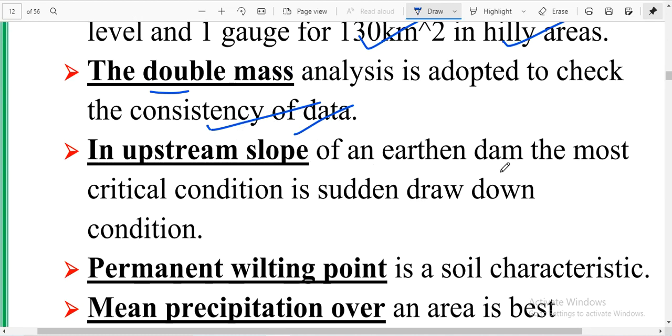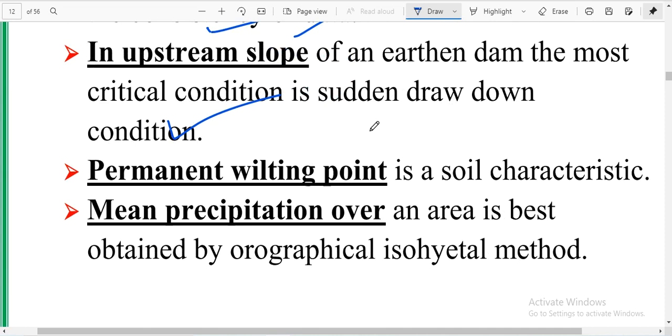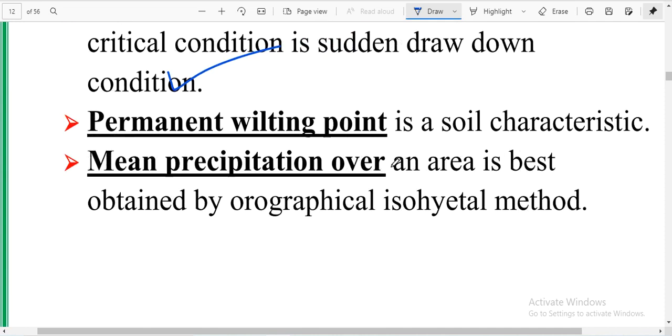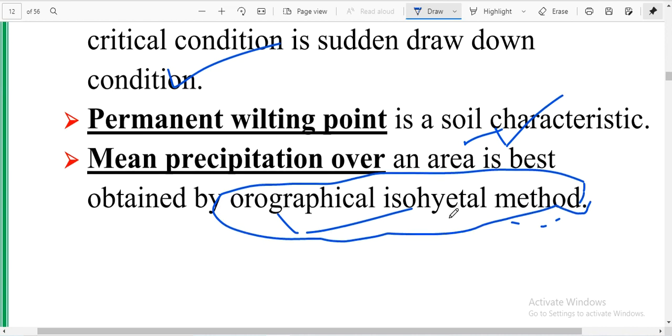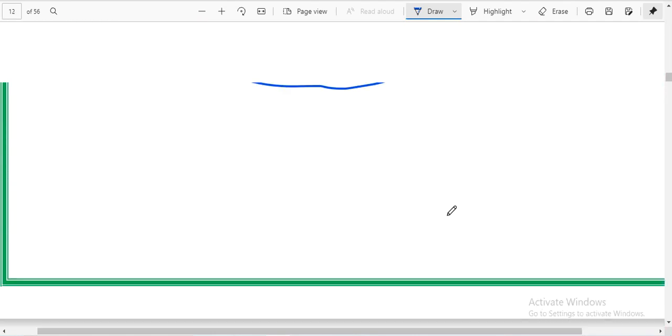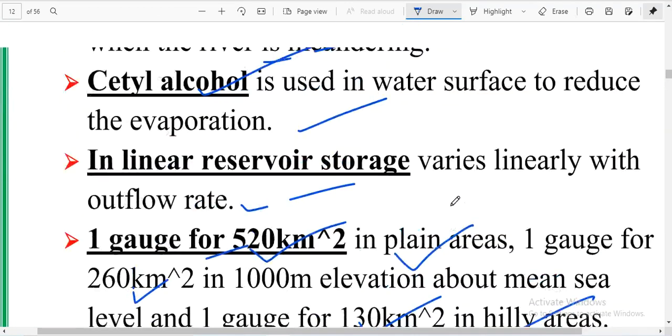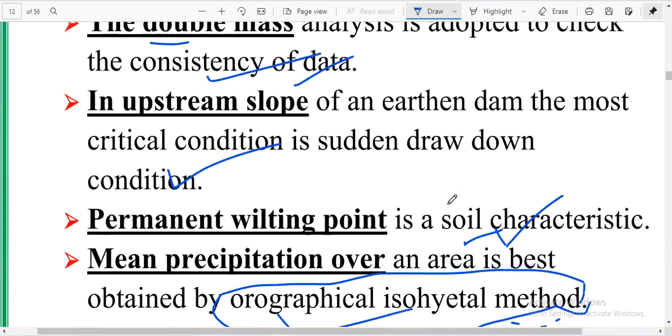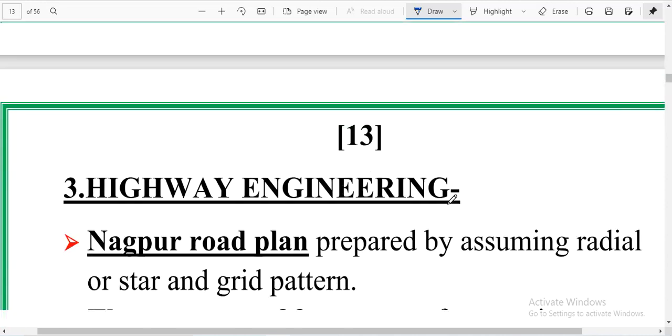In upstream slope of an earthen dam, the most critical condition is sudden drawdown condition. Permanent wilting point is a soil characteristic. Mean precipitation over an area is best obtained by orographical isohyetal methods.